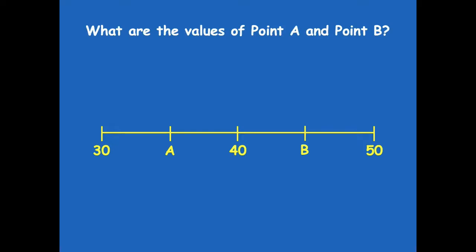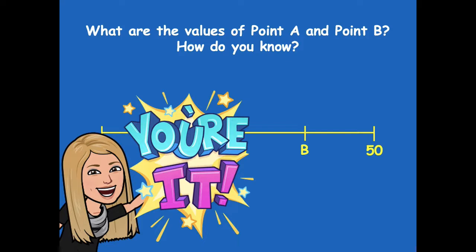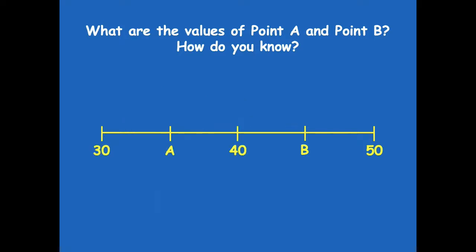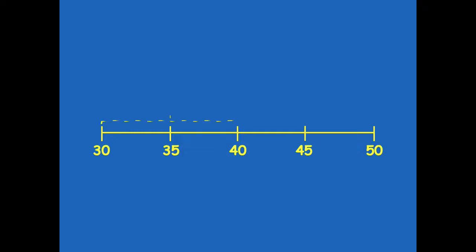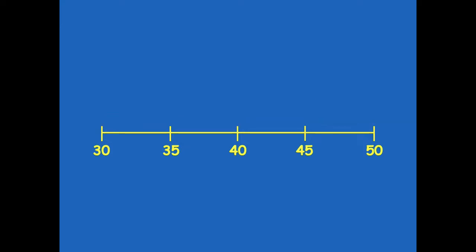What are the values of point A and point B, and how do we know? I think they are 35 and 45. Because from 30 to 40 is a distance of 10, and from 40 to 50 is 10. When I look in between, those distances are 5 — and 5 plus 5 equals 10. The other side is the same: 5 plus 5 equals 10. So A is 35 and B is 45.